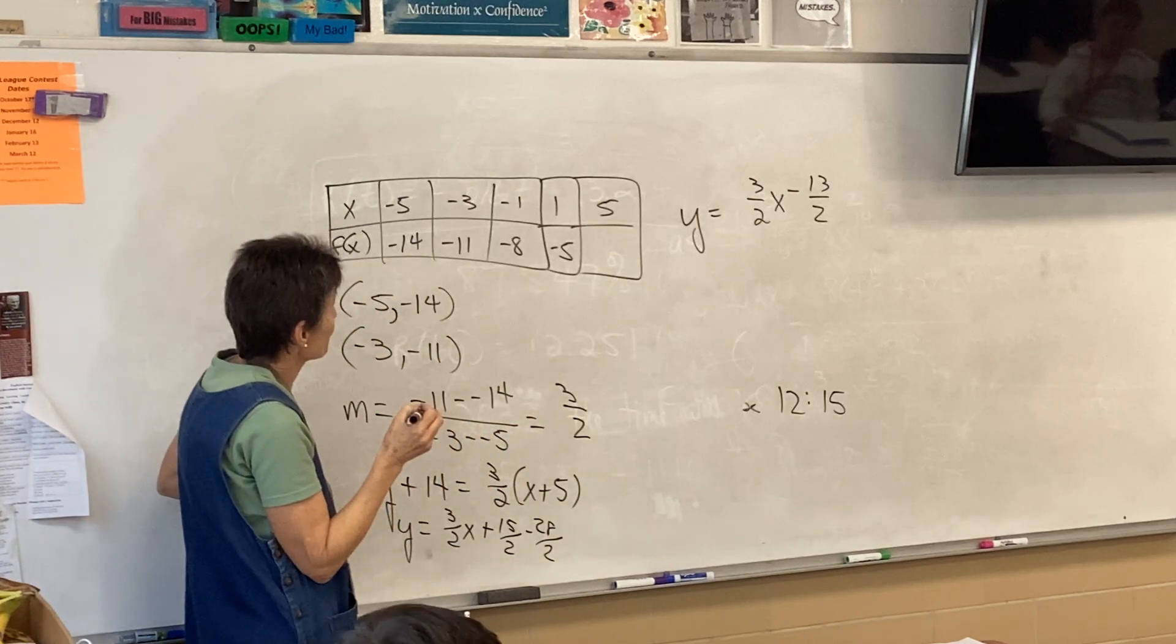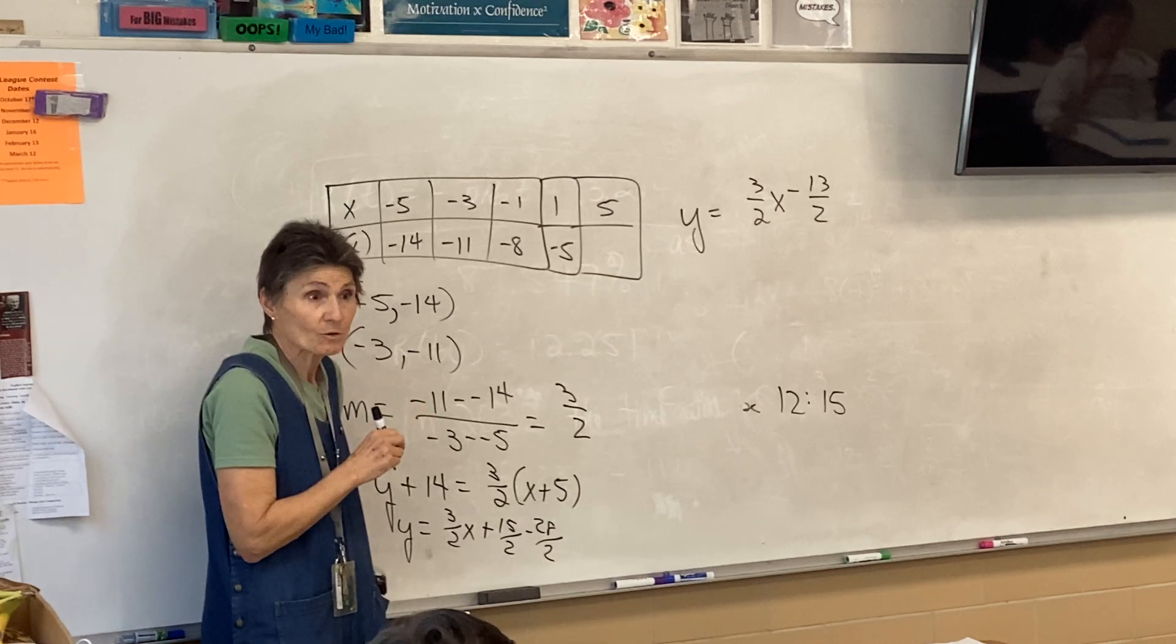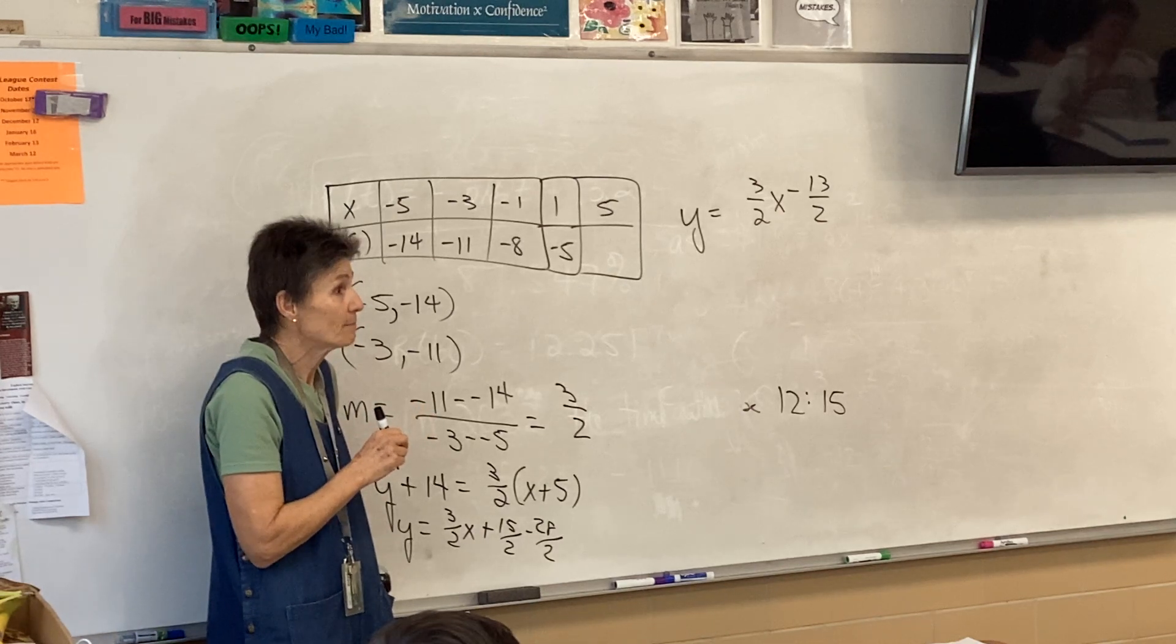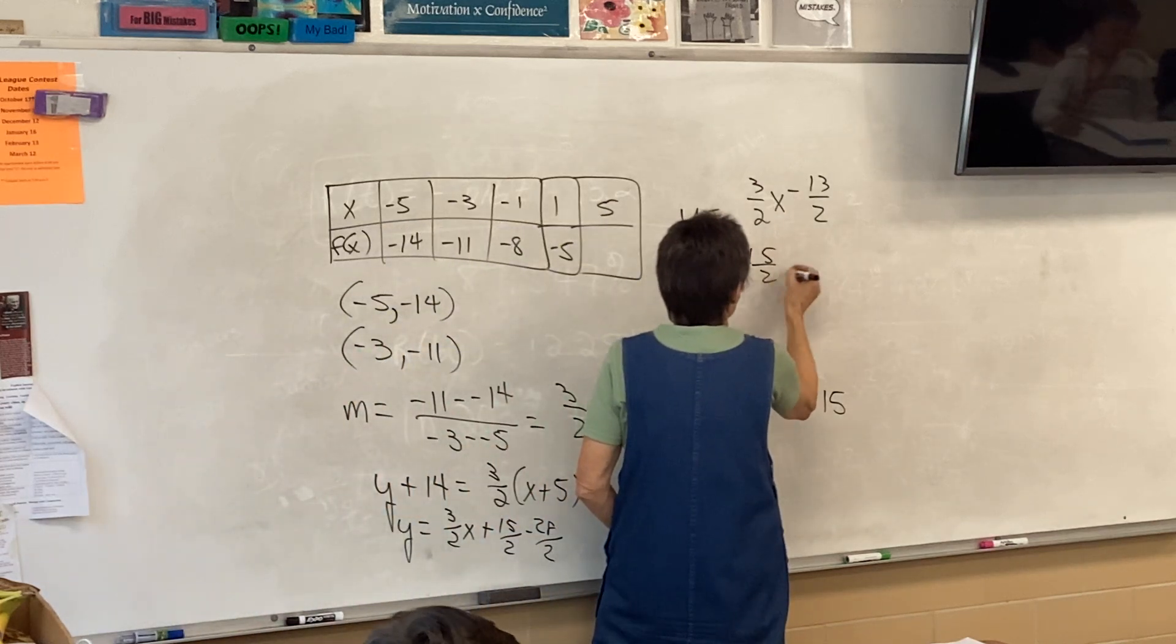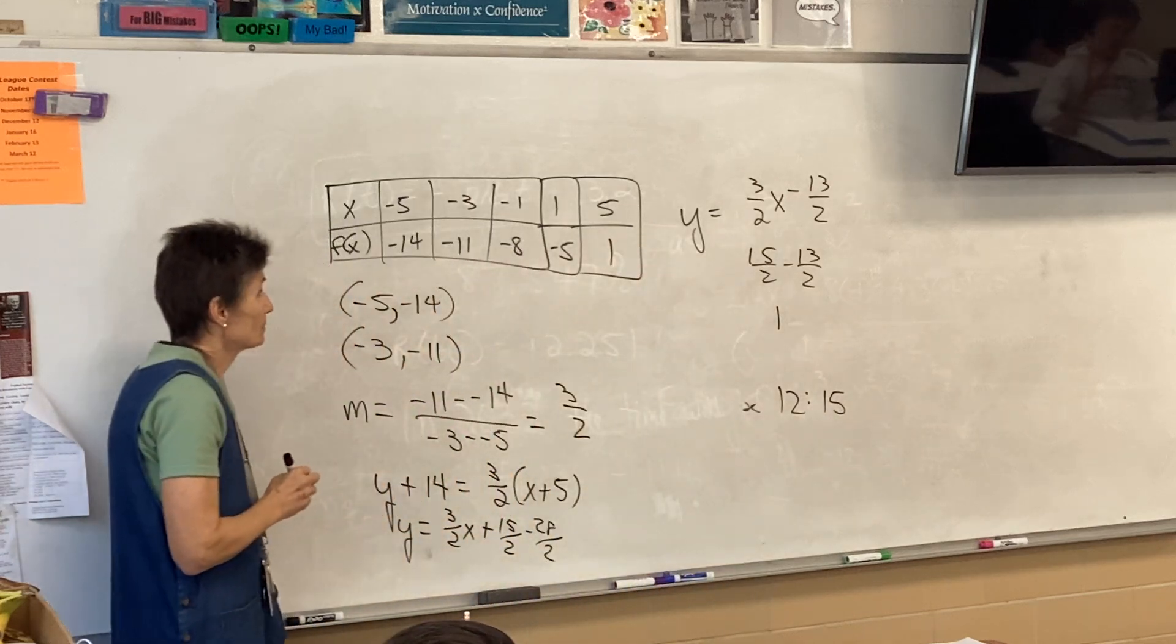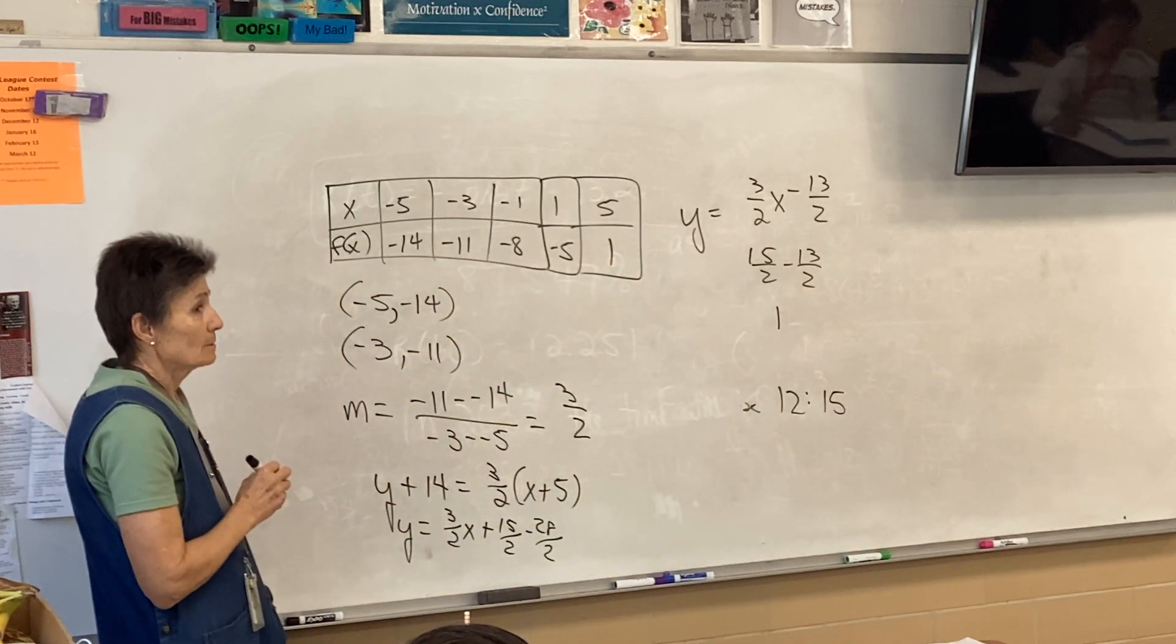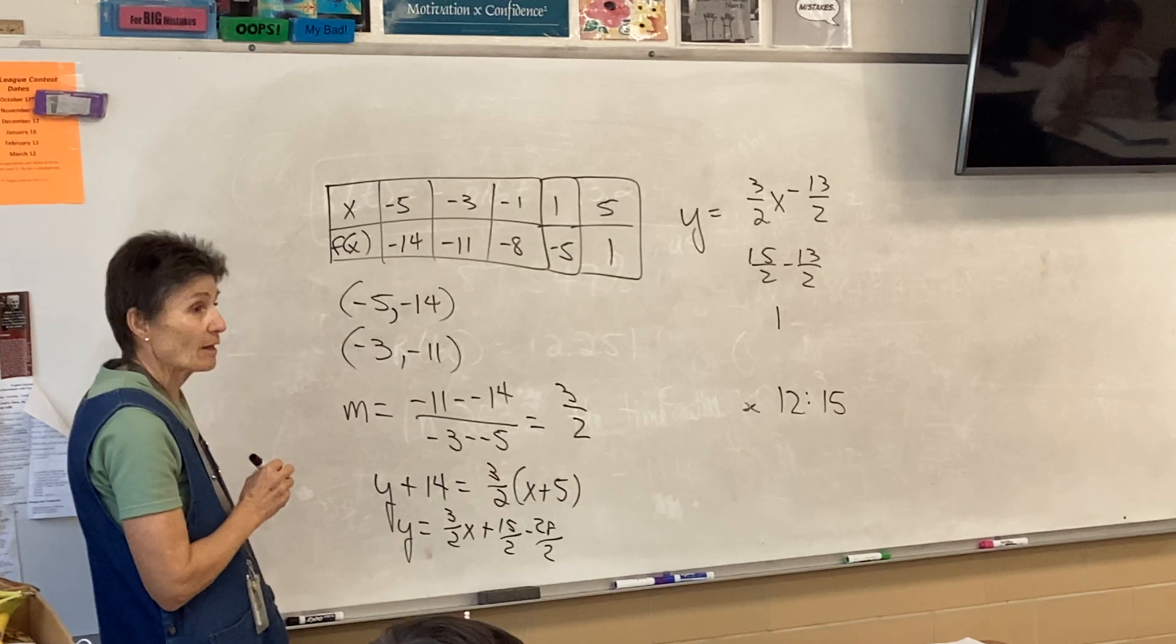So, y plus 14 equals 3 halves times x plus 5. So, I'm getting 3 halves x minus 13 halves, but I could have made a mistake. Yeah, I think that's right. So, now what? To answer the question, now I'll just sub in 5. So, that's going to be 15 halves. I think that works out just to be 1, doesn't it?